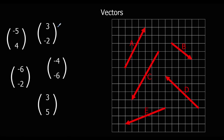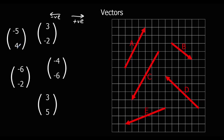To read a column vector, the top number is movement in the x direction. If it's positive, for example positive three, that's three to the right. If it's negative, for example negative five, that's five to the left. So right is positive and left is negative. The second number is movement in the y direction: a positive number means we're going up, and a negative number means we're going down.